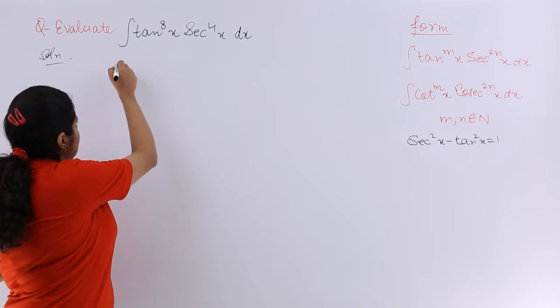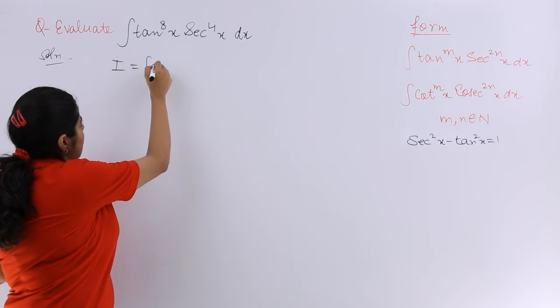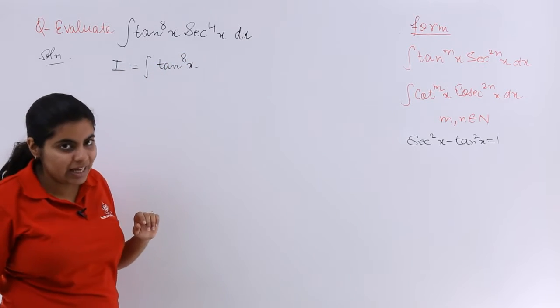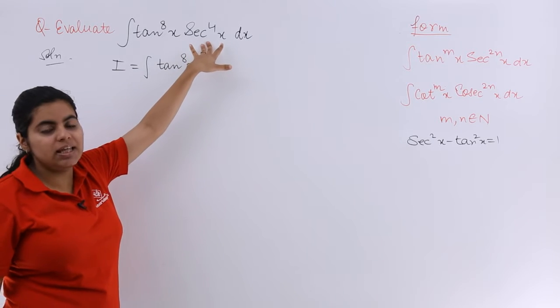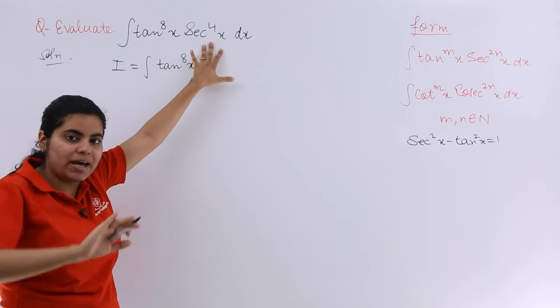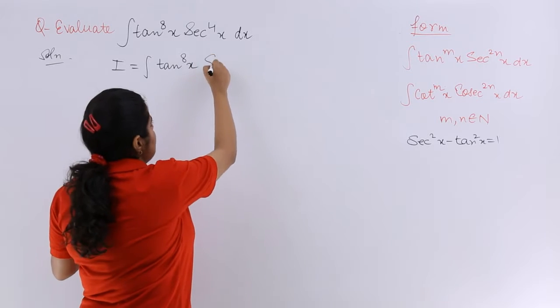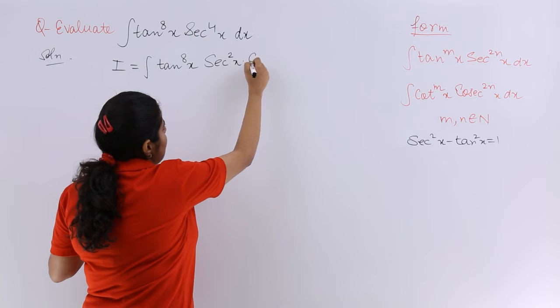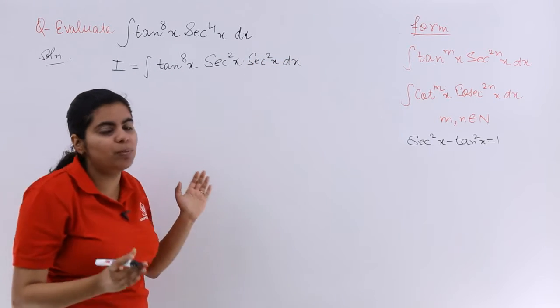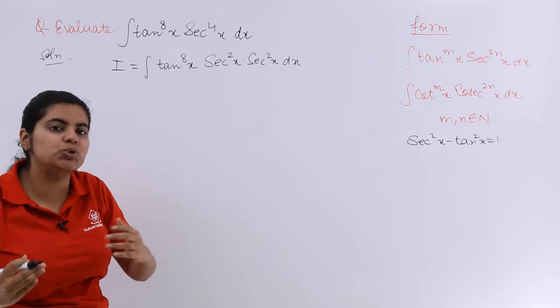So I write solution. Now I have my question such that it is tan x whole raised to the power 8, then secant is there in the power of 4. So can we take out secant square as separate? Yes I can. So it becomes secant square x. Again I have secant square x dx because I know that 4 power is composed of 2, 2 powers.